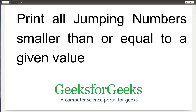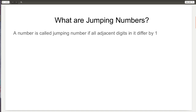The first question which arises is: what are jumping numbers? A number is called a jumping number if all its adjacent digits differ by 1. For example, 10 is a jumping number where the adjacent digits 1 and 0 differ by 1.